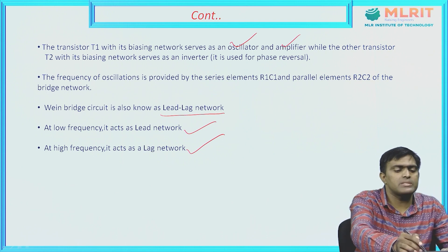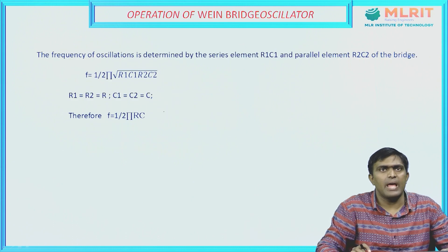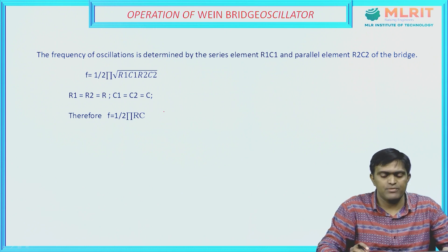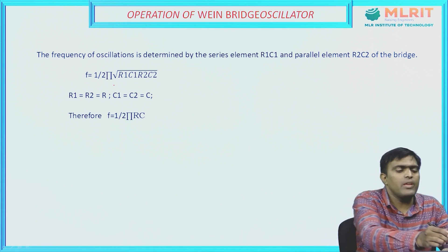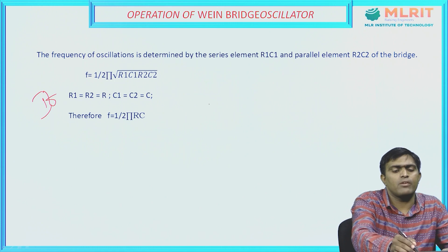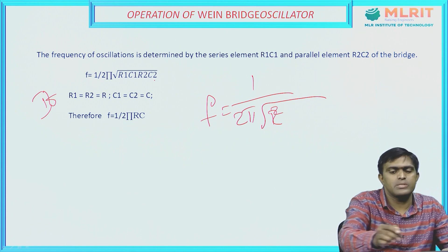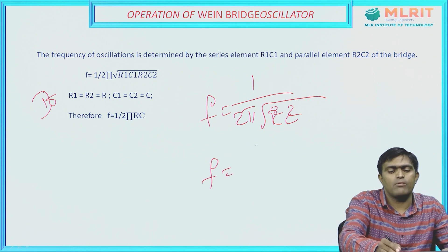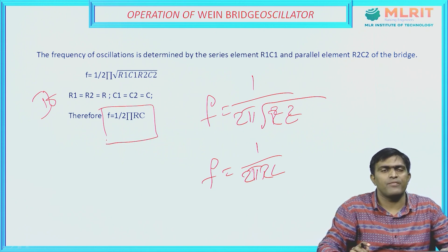The frequency of oscillation is determined by the series element R1, C1 and parallel element R2, C2 of the bridge, and is given by the expression: f = 1 / (2π × √(R1·C1·R2·C2)). If we assume R1 = R2 = R and C1 = C2 = C, then the expression simplifies to f = 1 / (2πRC). This is the frequency of oscillation for the Wien bridge circuit.